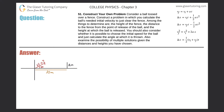Number 51: construct your own problem. Consider a ball tossed over a fence. Construct a problem in which you calculate the ball's needed initial velocity to just clear the fence. Among the things to determine are the height of the fence, the distance to the fence from the point of release of the ball, and the height at which the ball is released. Let's take a look — I drew a little picture and this will be our problem.